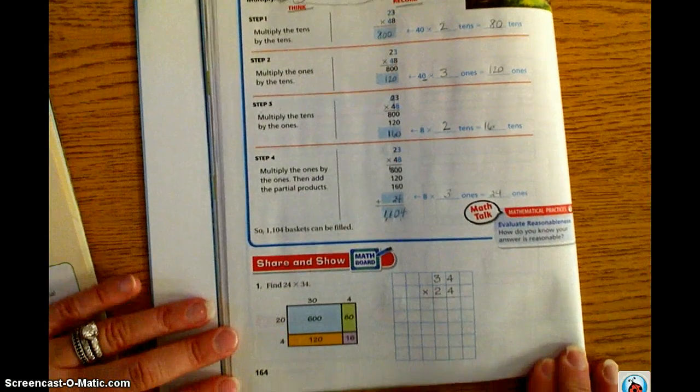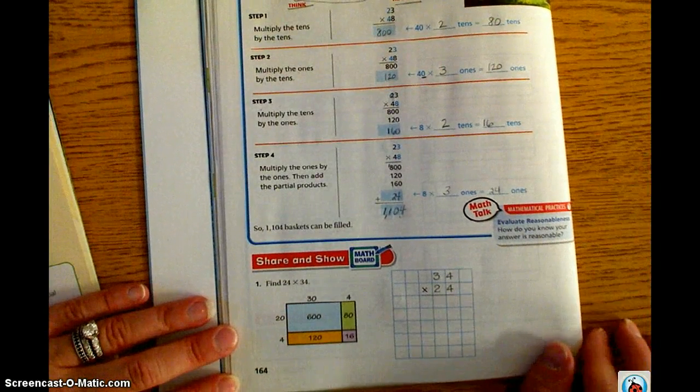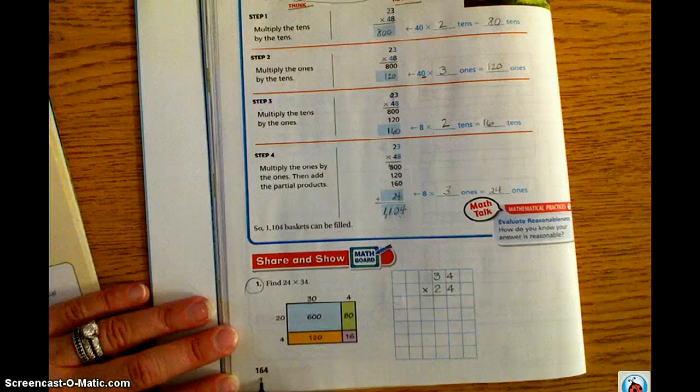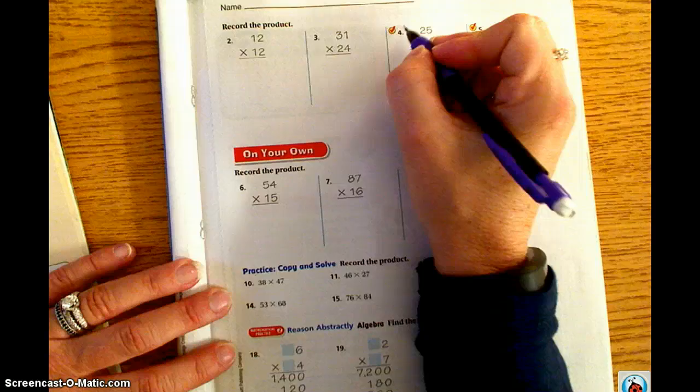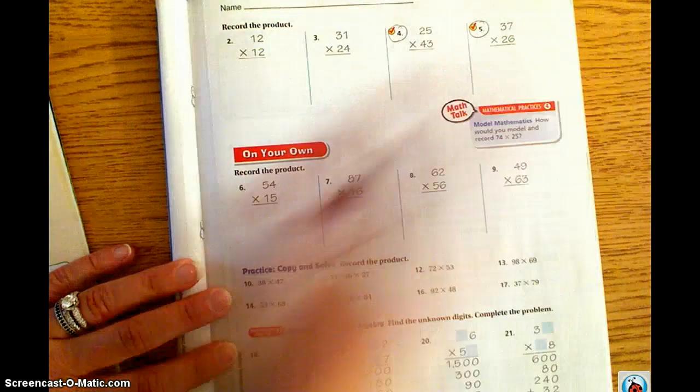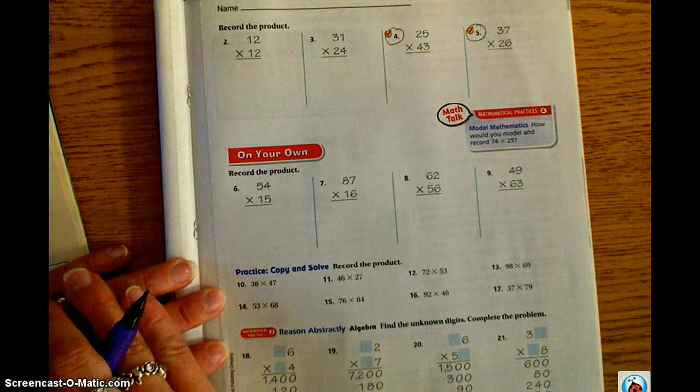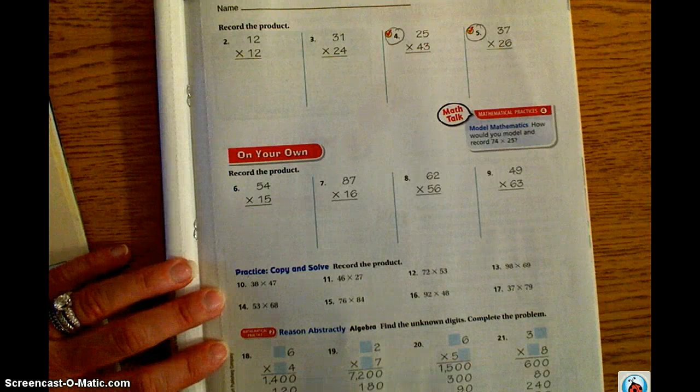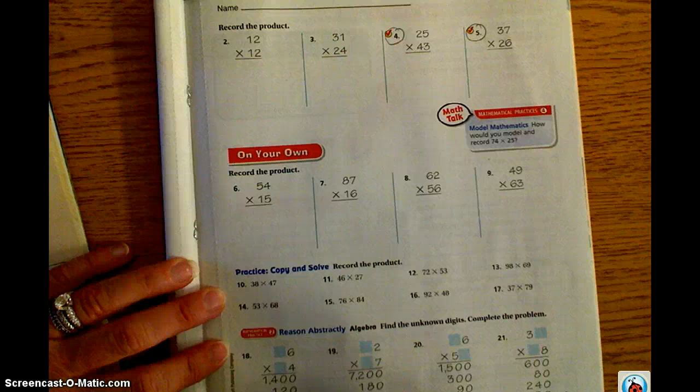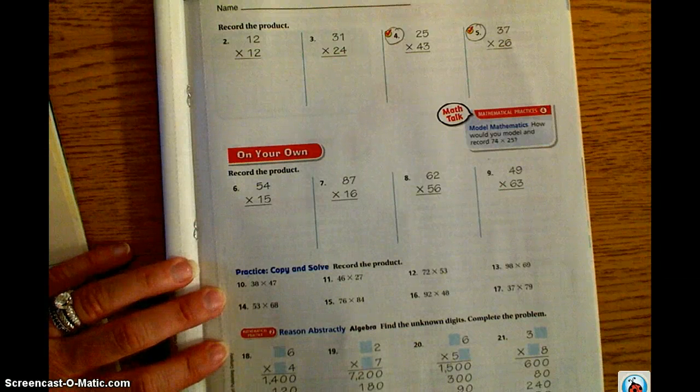I would like you to continue on to share and show. You are going to complete number 1, which is on page 164. Flip over to page 165 and you have number 4 and number 5 to complete. This section of your workbook, you are using partial products. So remember to think and record each step.